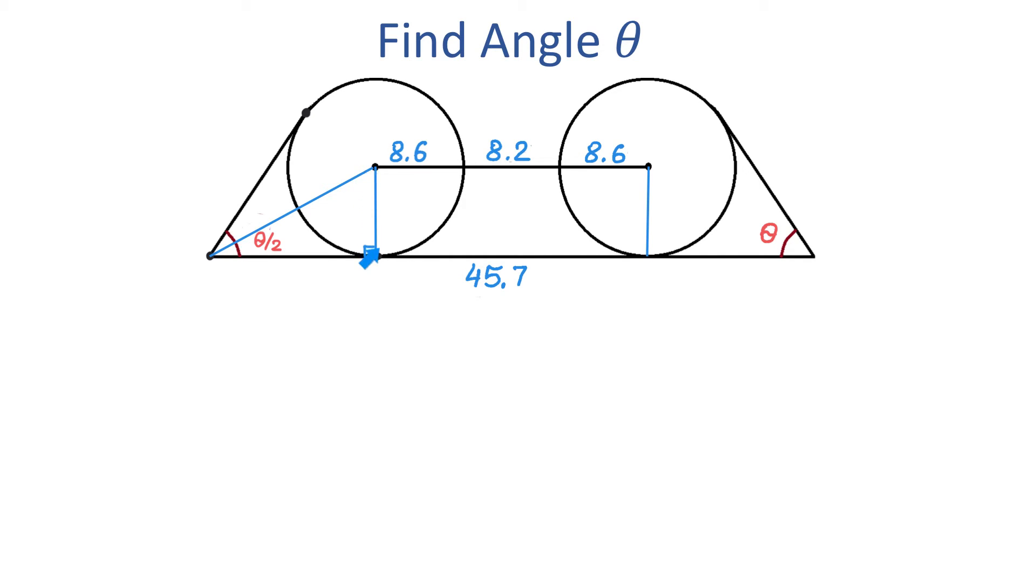In this right triangle, the right side is 8.6 units because this is the radius, and we can find the bottom side of this triangle by subtracting these three numbers from 45.7 and dividing the result by 2. The horizontal distance here is 45.7, and if we subtract these three numbers, we will get this length plus this length. If we divide this result by 2, we will get the length of the bottom side of this triangle. So 45.7 minus 8.6 minus 8.2 minus 8.6, all divided by 2, equals 10.15. This side of the triangle is 10.15.